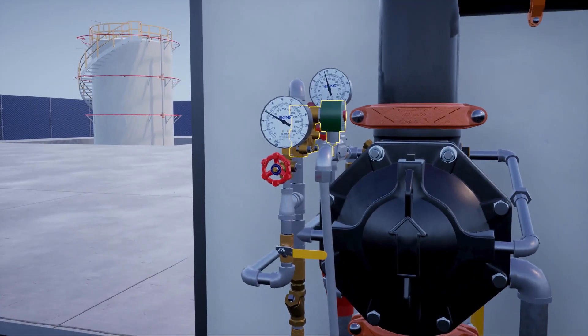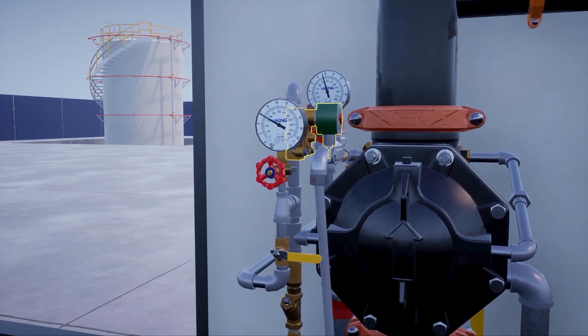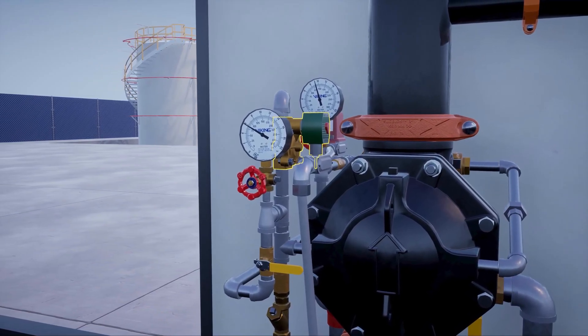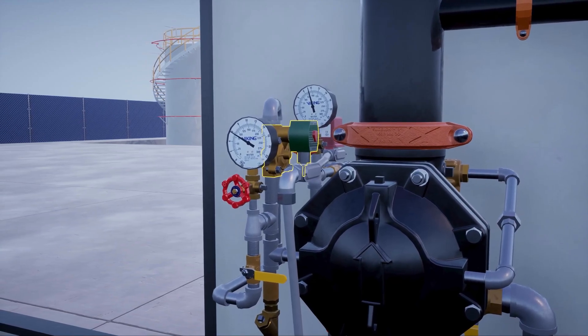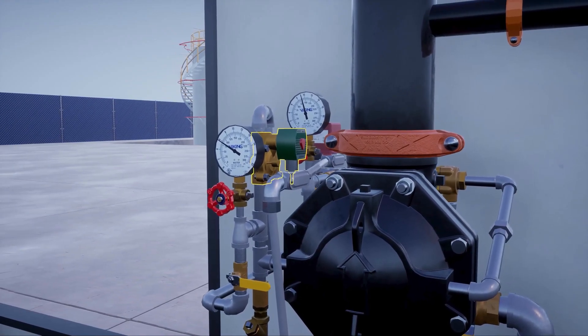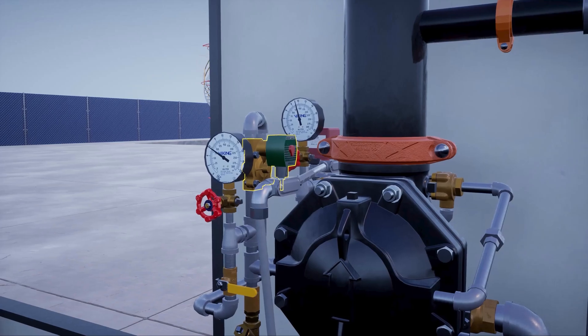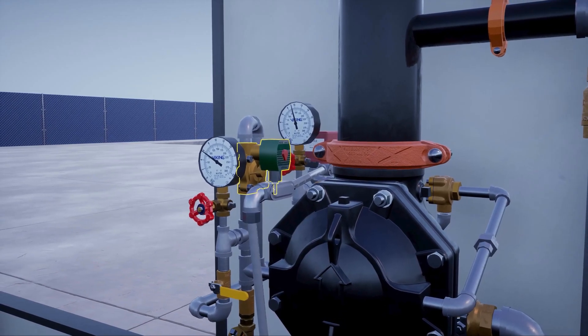The normally closed electric solenoid valve is attached to the top of the prime line. While closed, the solenoid valve keeps water pressure in the prime chamber. When activated open, it releases water pressure from the prime chamber.